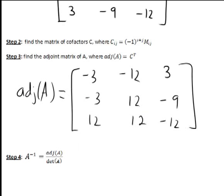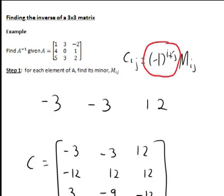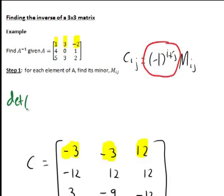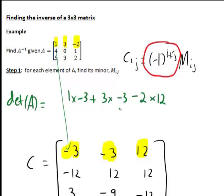The final step is that A inverse equals the adjoint matrix of A divided by the determinant of A. There is a fast way to calculate the determinant given that we've already found the cofactors: expanding along the first row, det(A) = a11·C11 + a12·C12 + a13·C13 = 1×(−3) + 3×(−3) + (−2)×12 = −3 − 9 − 24 = −36.